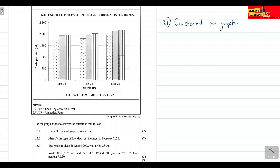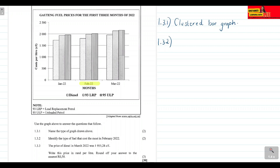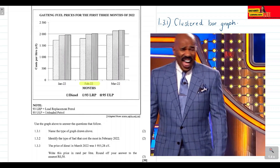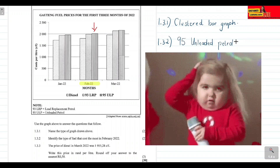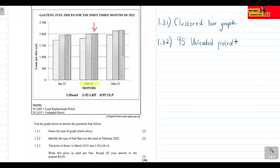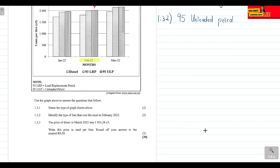Question 1.3.2 asks us to identify the type of fuel that cost the most in February. We focus our attention on the month of February and determine which fuel cost the most. The fuel that basically costs the most in February 2022 is the 95 Unleaded Petrol. So the 95 Unleaded Petrol cost the most in February 2022.